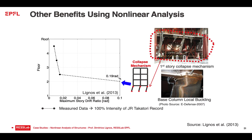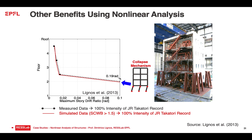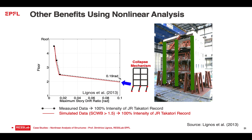Once you have a validated model that can predict collapse, you can reuse it by changing the column section to see how to avoid collapse. If you change the column so that the strong column-weak beam ratio shifts from 1.5 to 2, the predicted deflection profile becomes uniform and all damage shifts to the beams.